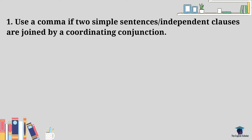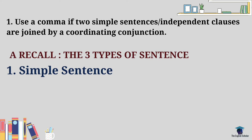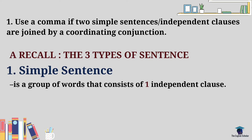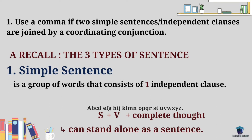To further understand this, let us first familiarize or recall the three types of sentences. First, the simple sentence. A simple sentence is a group of words that consists of just one independent clause. An independent clause is a group of words that contains a subject, a verb, and a complete thought. In short, an independent clause is a clause that can stand alone as a sentence.